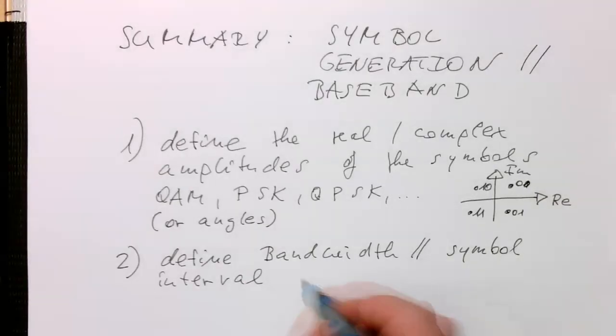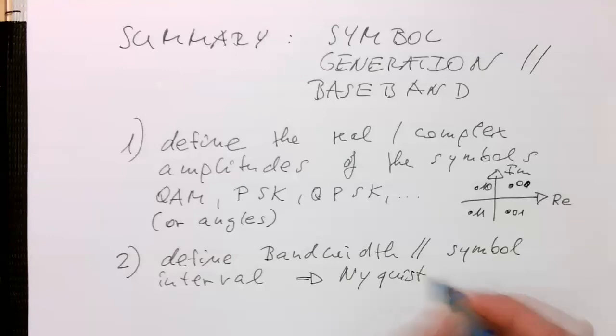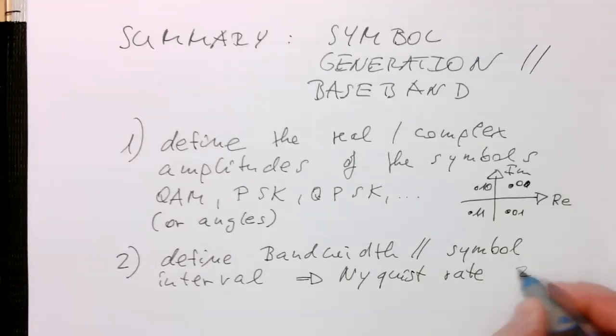And this led us to the Nyquist rate, which is 2B.